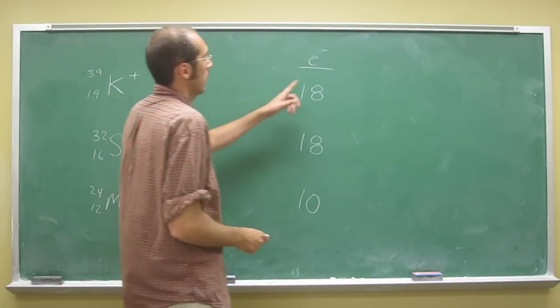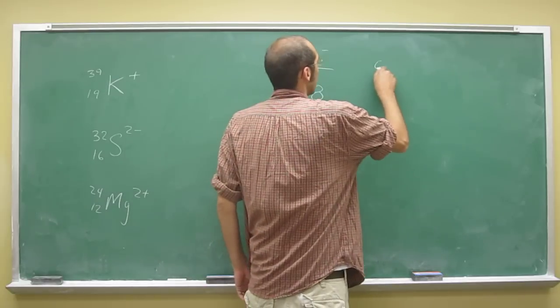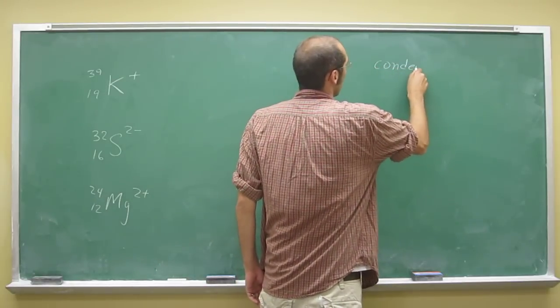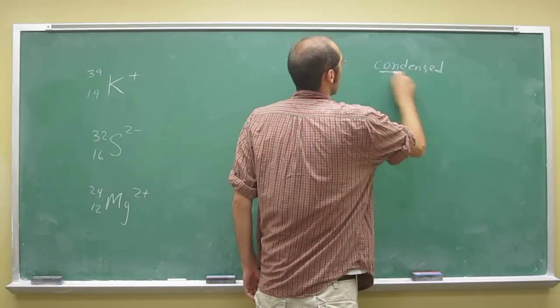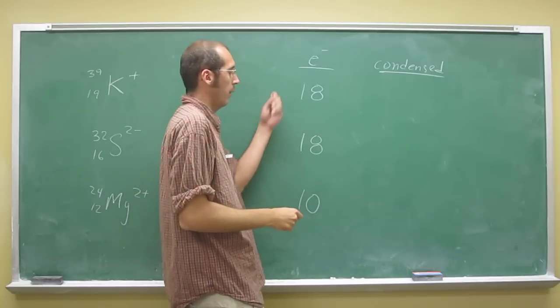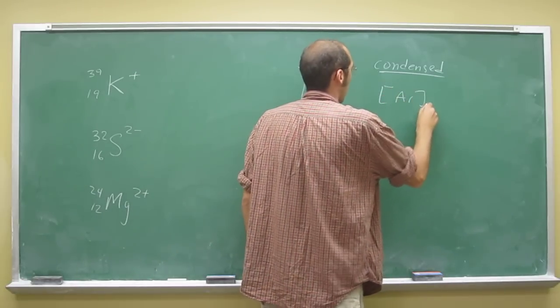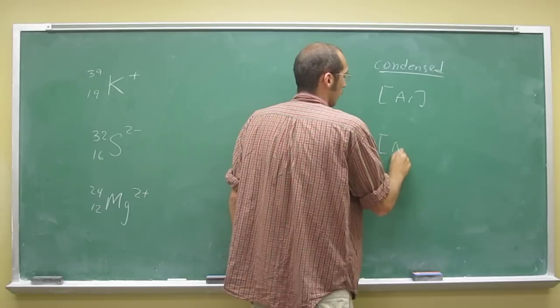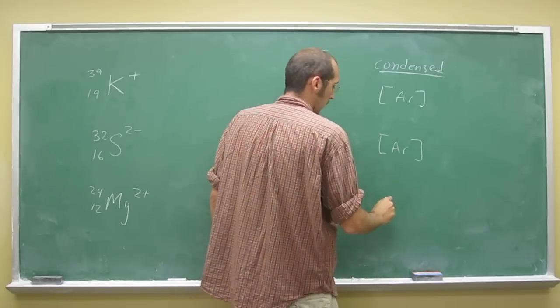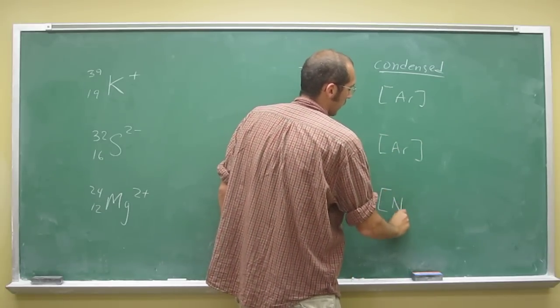So this wants to go... if you want to do the condensed, we just talked about this where 18, 18, this is the argon configuration, and 10 is the neon configuration.